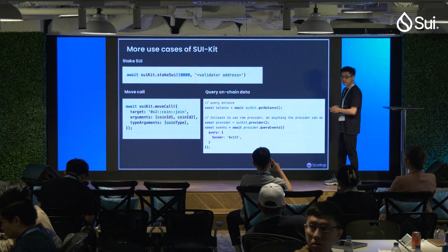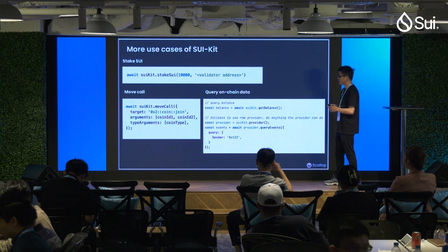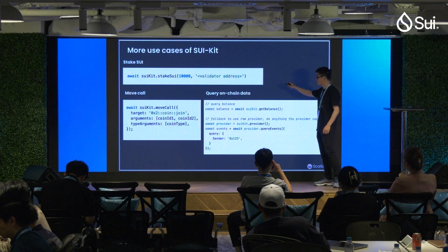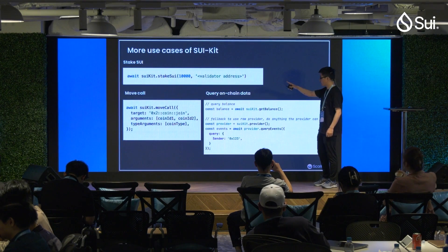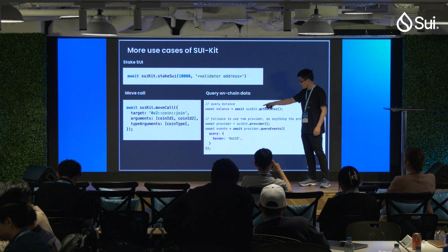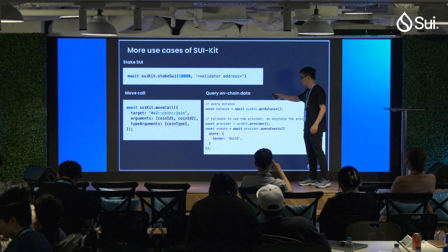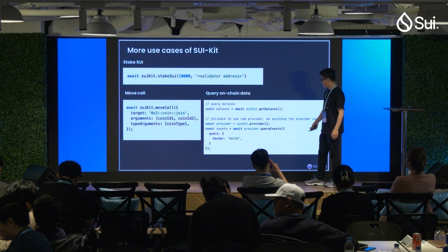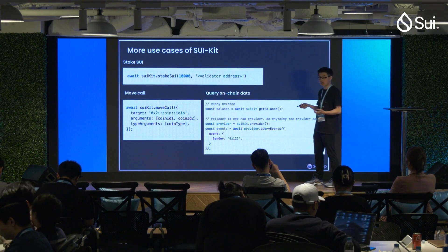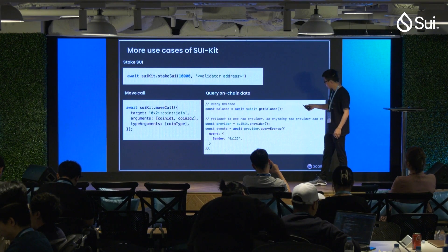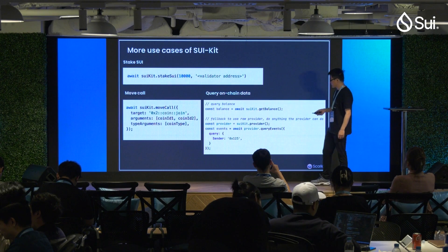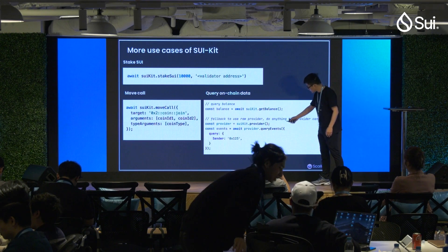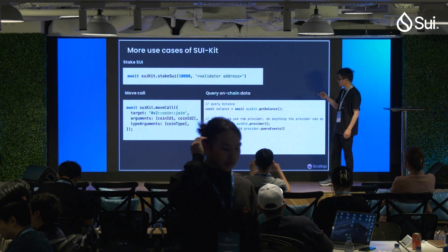Except for transfer scenarios, we are also encapsulating many other common cases frequently used by many projects. For example, you can stake SUI by specifying the amount and the validator's address and calling the stake method — that's it. You can also make Move calls by providing the signatures and arguments, or even query on-chain data. For on-chain data it's quite straightforward — you just get the balance. For cases we haven't covered yet, there is a fallback to the raw provider from the Mysten Labs SDK, which lets you do things like query events by calling the provider and passing those parameters.